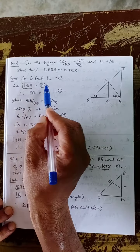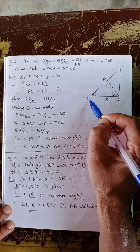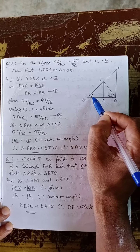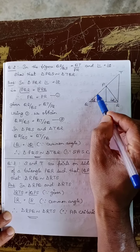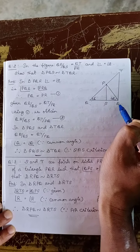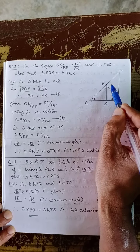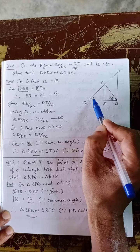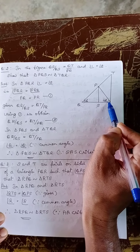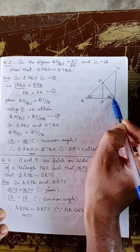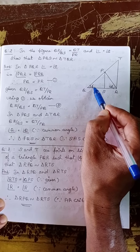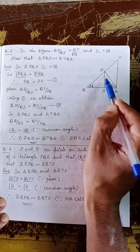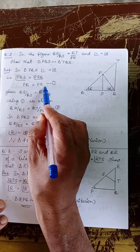See the answer. In triangle PQR, angle 1 means angle PQR and angle 2 means angle PRQ. Since angle PQR is equal to angle PRQ (given), the opposite sides are equal: the opposite side of angle R is PQ, and the opposite side of angle 1 is PR. Therefore, PQ is equal to PR.